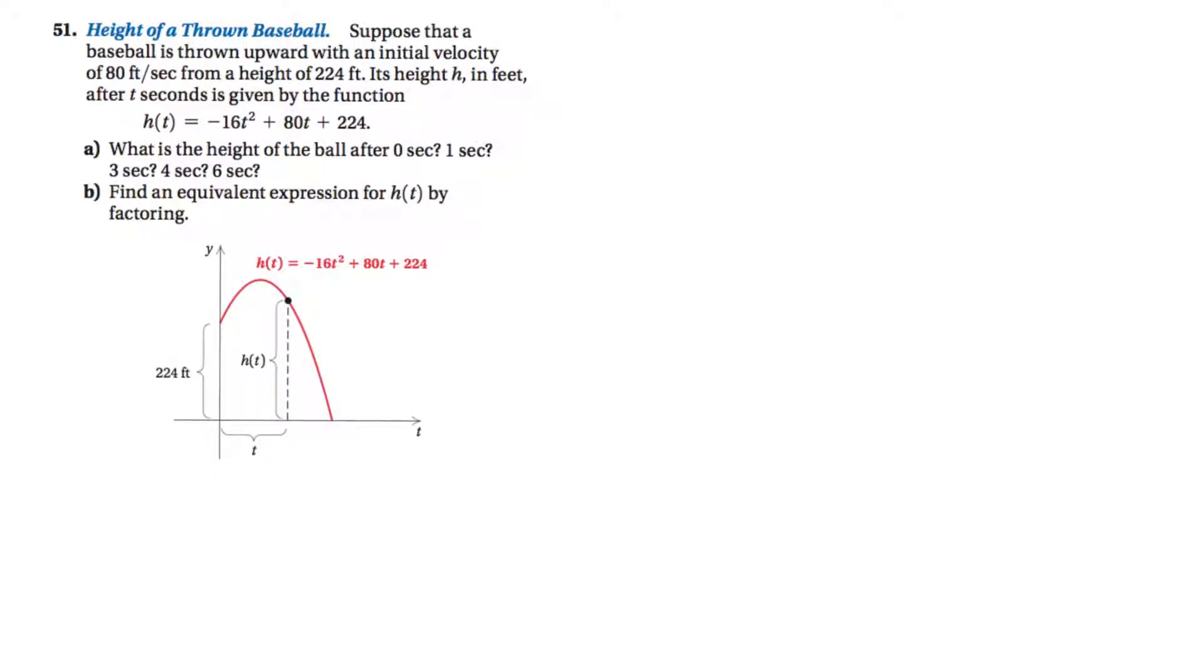All right, here's a question where we can use factoring to help us. It's showing us a quadratic function, showing us a graph, and we're throwing a baseball. Interestingly, so they're throwing a baseball, and they're starting 224 feet in the air. So they're throwing it from the top of a building somewhere. Interesting. So there's the flight, and the path is defined by that function.